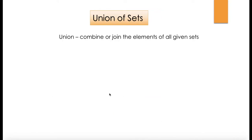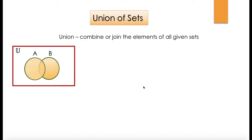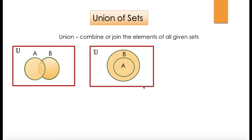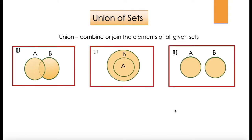When we looked at union of sets, we said it is combining or joining the elements of all given sets. We had three different diagrams to represent that. In each diagram, the shaded portion shows the union or the combined elements of sets A and B.